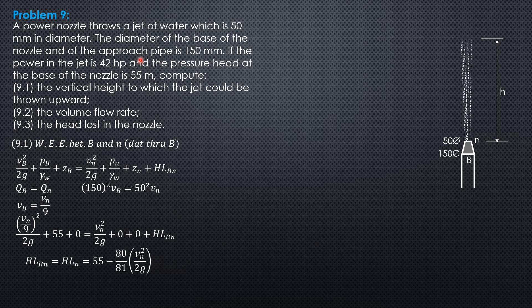Since the power horsepower in the nozzle is given and the only energy available at n is the velocity head at the nozzle tip. So horsepower at n is Q gamma water velocity head at n over 746 if we express gamma in newtons per cubic meter.